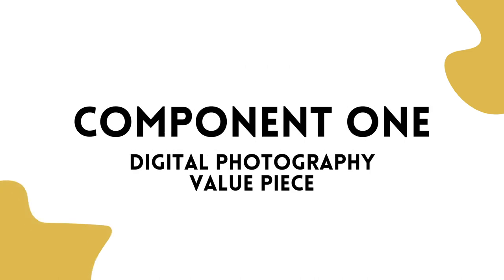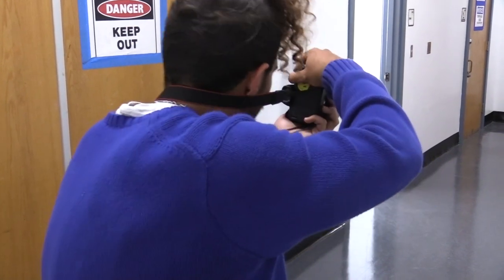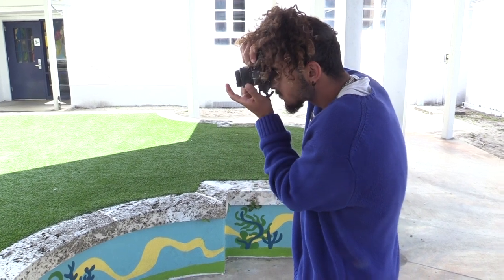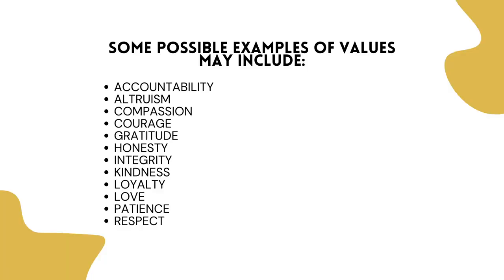Component 1: Digital Photography, Value Piece. Applicants will stage, produce, photograph, and submit one final photograph that exhibits one value that is very important to them. Some possible examples of values may include accountability, altruism, compassion, courage, gratitude, honesty, integrity, kindness, loyalty, love, patience, and respect.